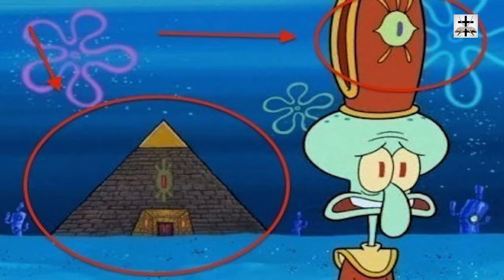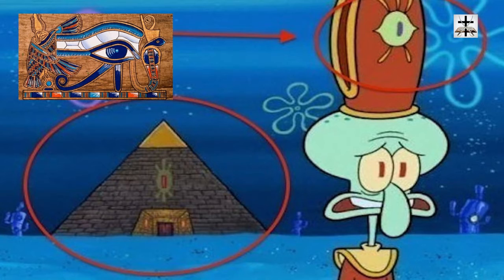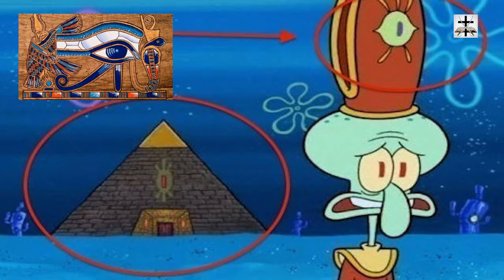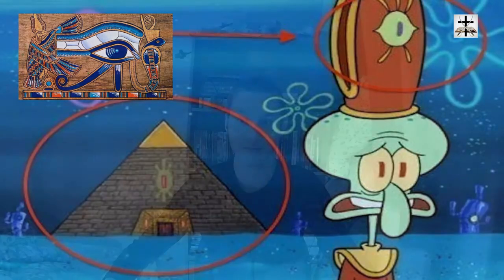Here's the next example — I showed this in my SpongeBob video — where you've got Squidward essentially joining a freemasonic illuminati lodge. He's got the illuminati Eye of Horus on his hat, and the illuminati pyramid with the Eye of Horus right in the background — the all-seeing Eye of Horus of Egyptian mythology. Open for everyone to see, right in your face. When you're a kid you think it's just a fun little cartoon, but it's open symbolism.